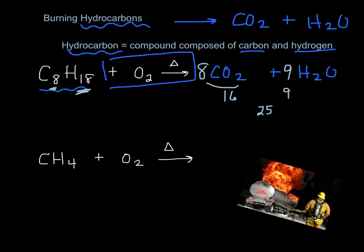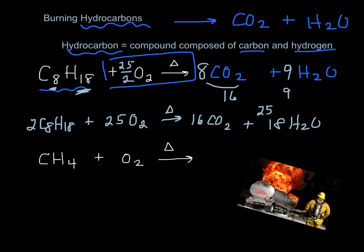Well, what can I put in front of O2 to be 25? Well, I can put 25 over 2. And it's actually okay to leave it like that. This is a perfectly fine balanced equation. If you want to, you can also double everything. Either one is fine. You can leave the 25 halves if you want to, or you can double everything so you have whole numbers. Both are legal. And this down here in the corner is a picture of burning gasoline, unfortunately, in a truck.